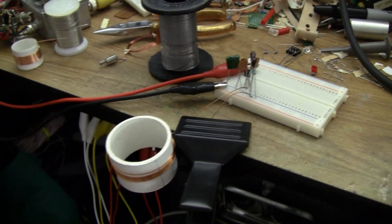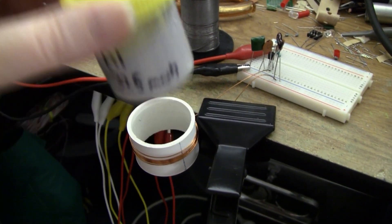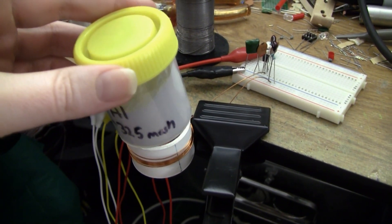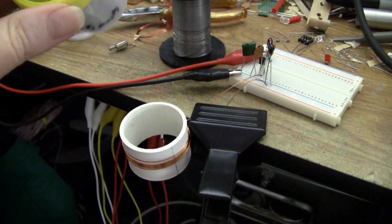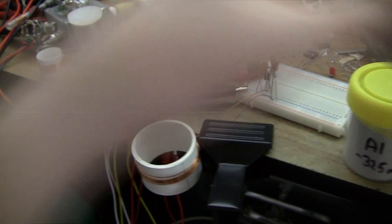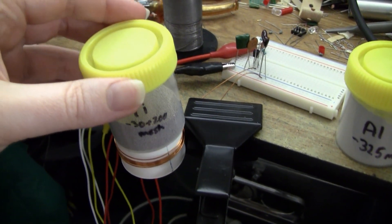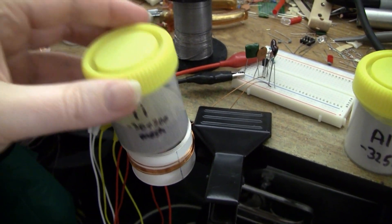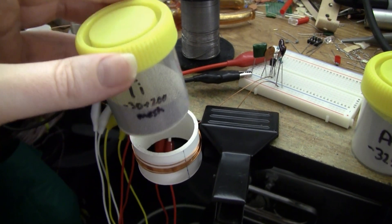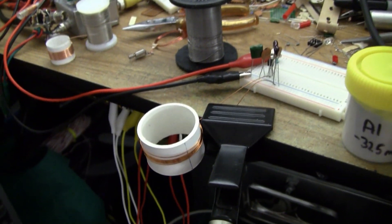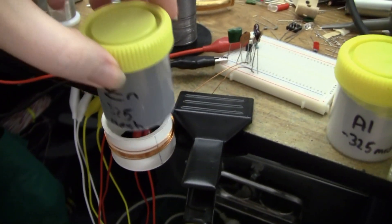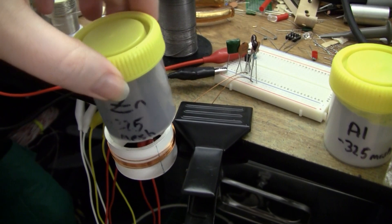Let's try aluminium first. As you can see it doesn't have a whole lot of effect. Let's go with titanium. Titanium has quite an effect and you hear the frequency shifts up which means the inductance is dropping. Now, zinc, very similar to the aluminium, not a whole lot of an effect.